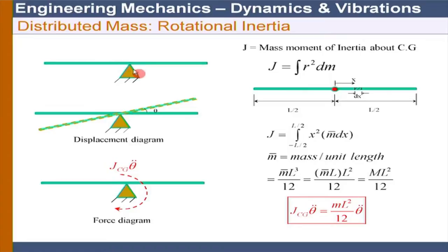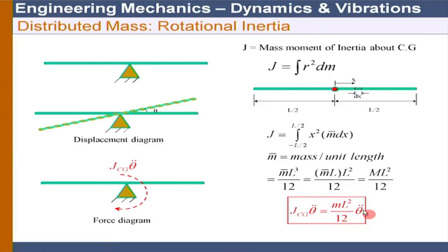The mass moment of inertia about the mass center is mL²/12, where capital M is the total mass. Suppose I have a pin somewhere in the body and the body is rotating counter-clockwise with small oscillation, so theta comes into play. The rotational inertia force is shown in a clockwise fashion, opposing the motion of the bar. Therefore this should be capital M·L²/12·θ̈. We will need this when the body is rotating about its mass center. We can then represent the rotational inertia force in this way.